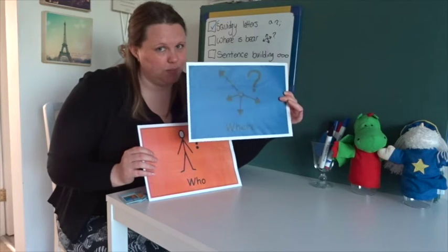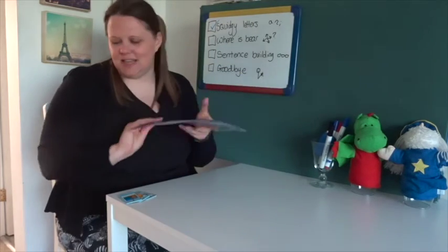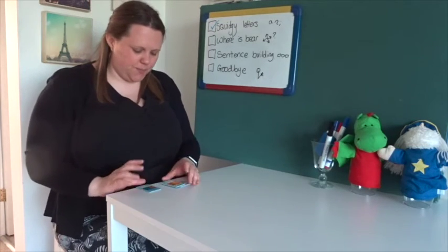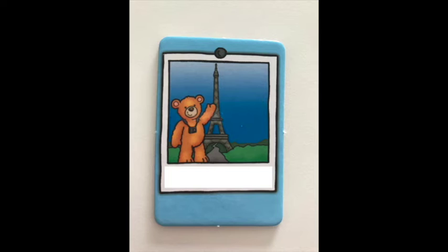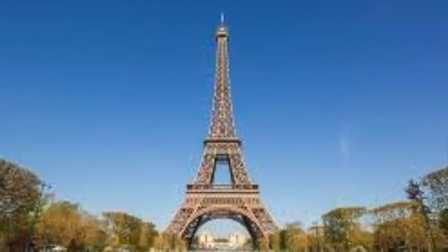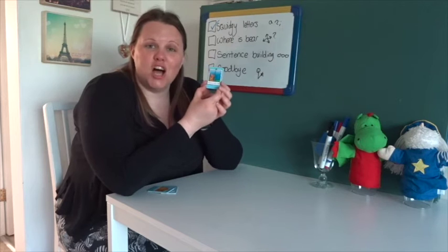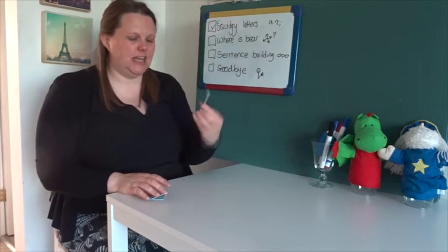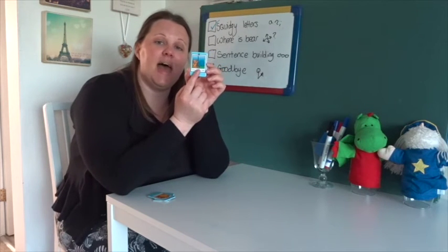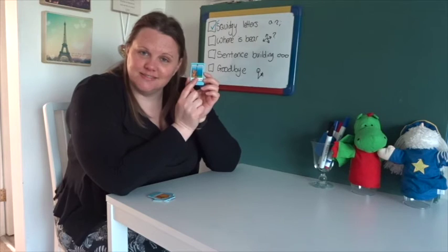Let's see our first picture — where is bear? You might need some extra information: bear is standing in front of something called the Eiffel Tower. Now the Eiffel Tower is only in one country in the world — do you know the country? The Eiffel Tower is in France. So the country that bear is in is France. Bear is in France!